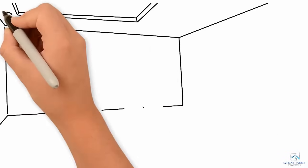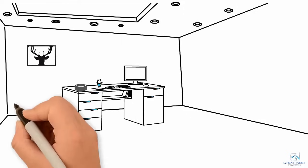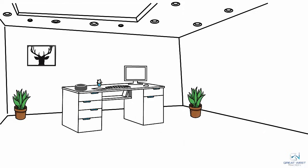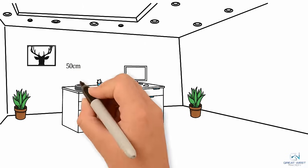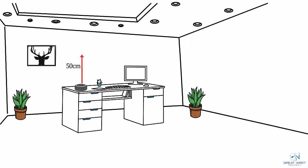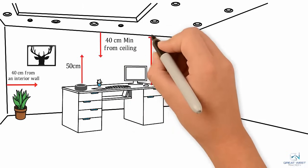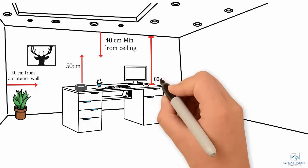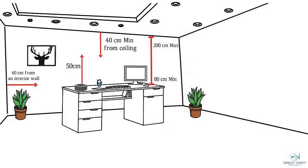There is also a list of distances from objects, floors, and walls that need to be considered when placing your device. Health Canada suggests no closer than 50 cm from an exterior wall, no closer than 40 cm from an inside wall or a ceiling. Testing devices should be placed between 80 cm to a maximum of 200 cm from the floor.